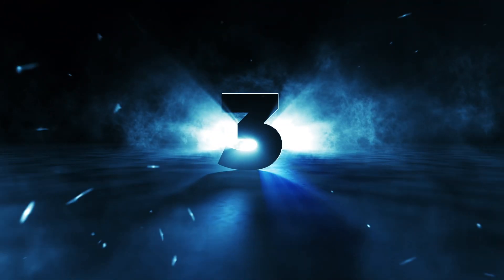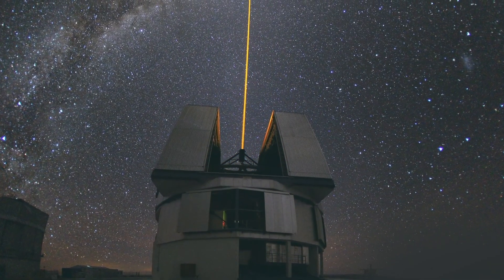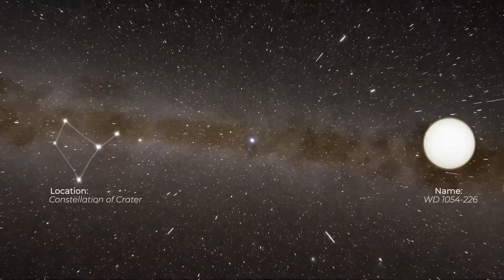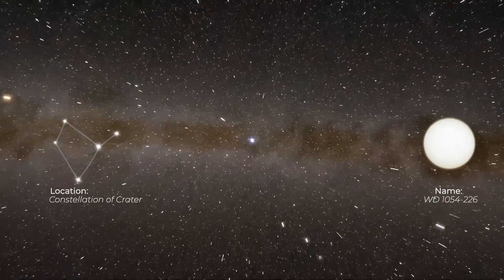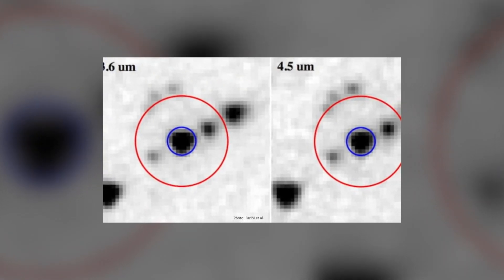Number 3. A Habitable Planet Orbiting a White Dwarf. Earlier this year, scientists noticed fluctuations in the light detected from the relatively cool White Dwarf star and decided to investigate it. Upon further study, they discovered that the changes in the emitted light are due to an orbiting object, possibly an exoplanet.